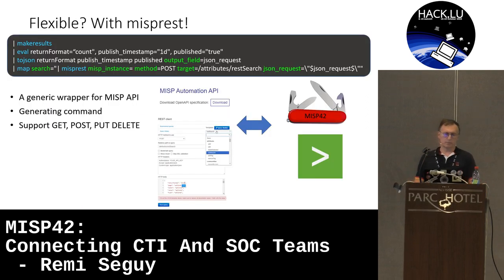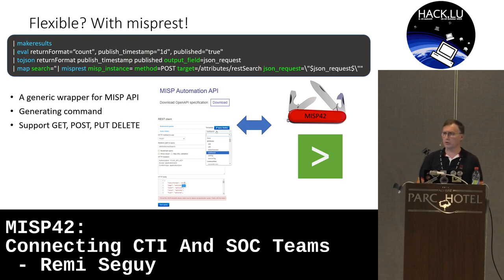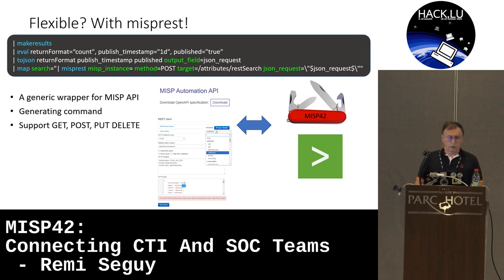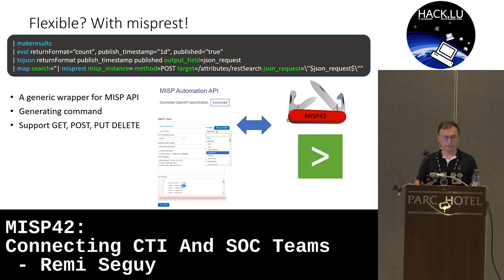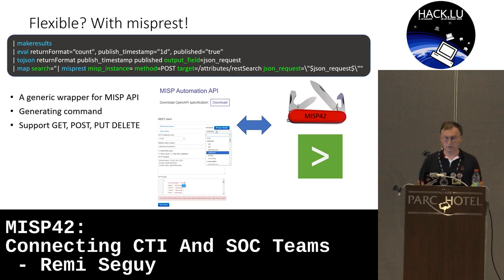Since not all use cases can be foreseen, there is also the MISP REST custom command — a generating command. You can use the Splunk map command to prepare a JSON_request and pass it to MISP REST. It supports all four HTTP methods of the MISP REST API: GET, POST, PUT, and DELETE. So you can use any endpoint from the documentation, provided you have granted the appropriate permissions to the API key.